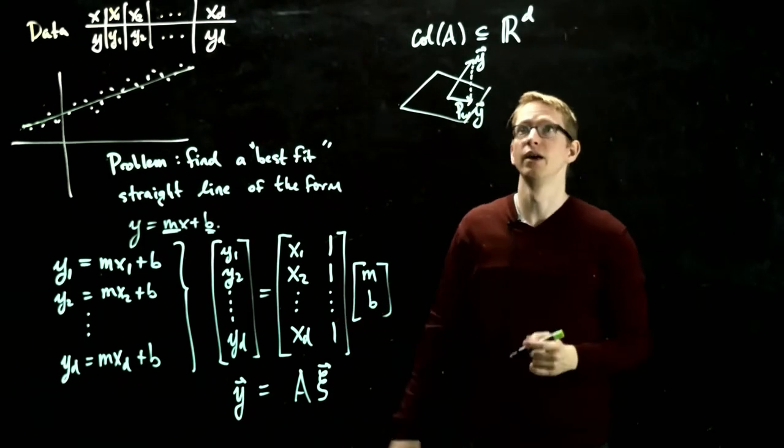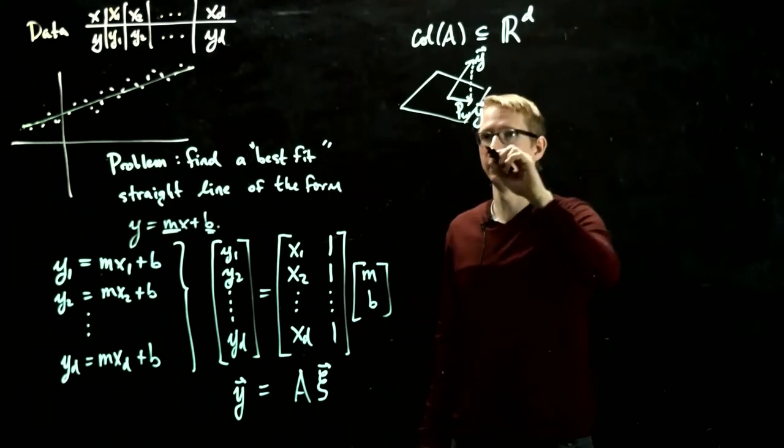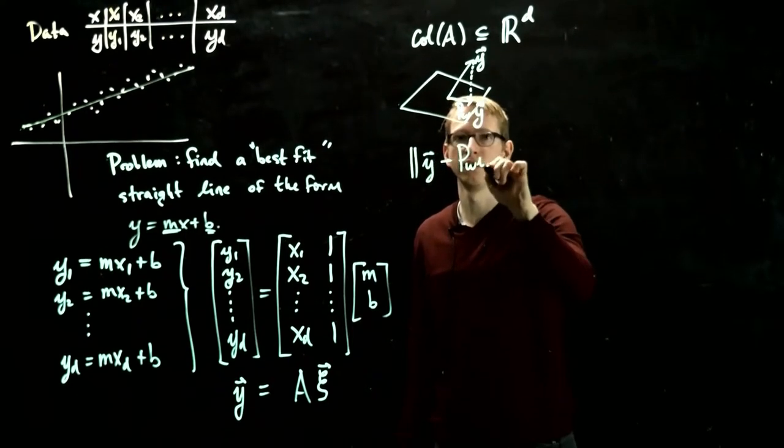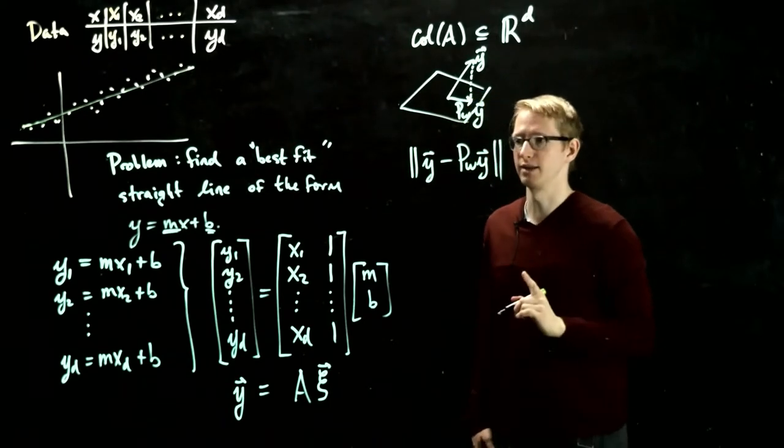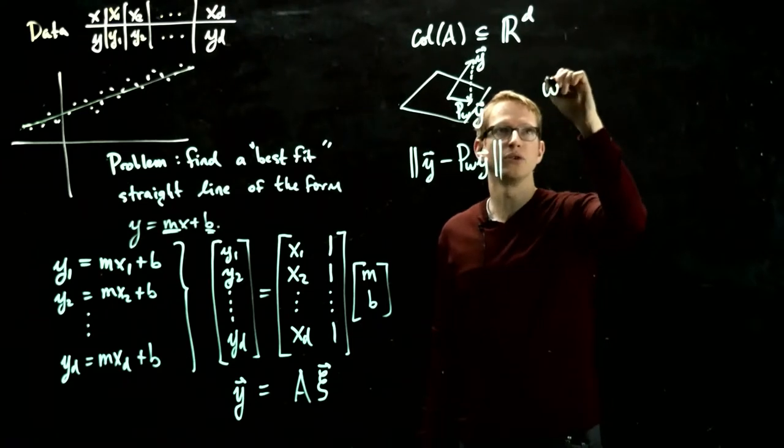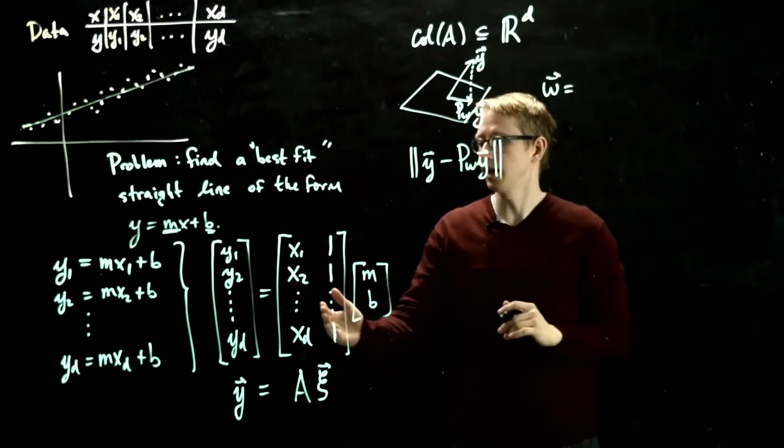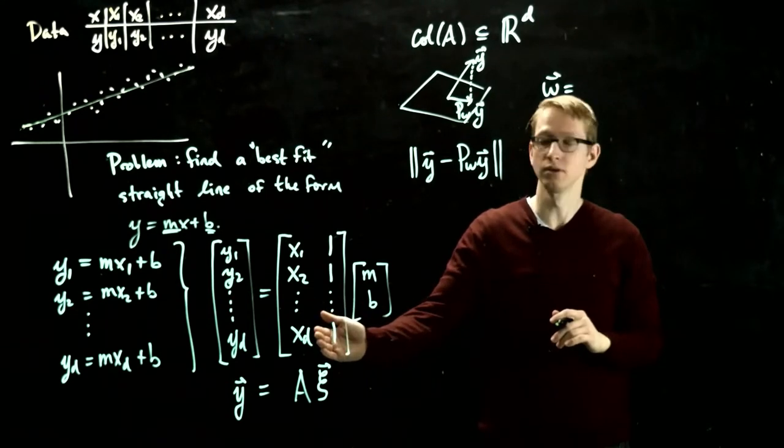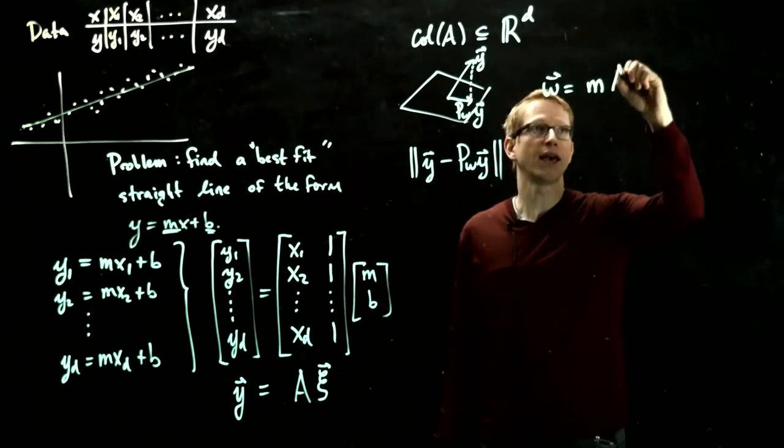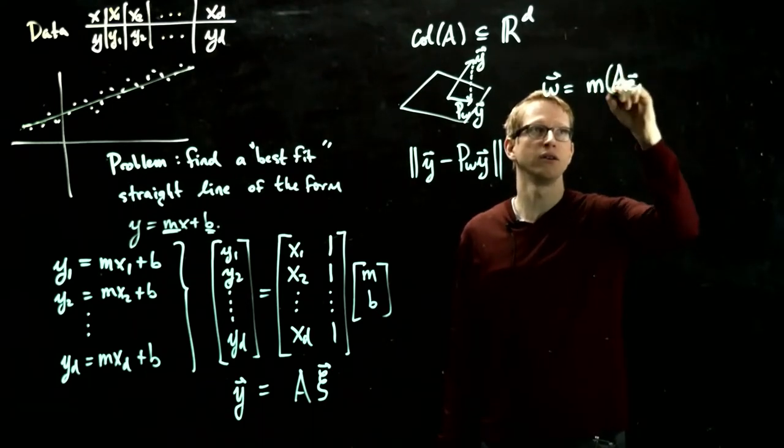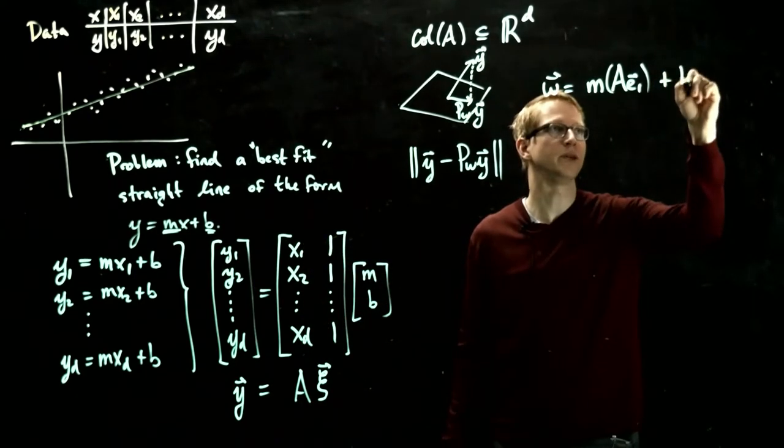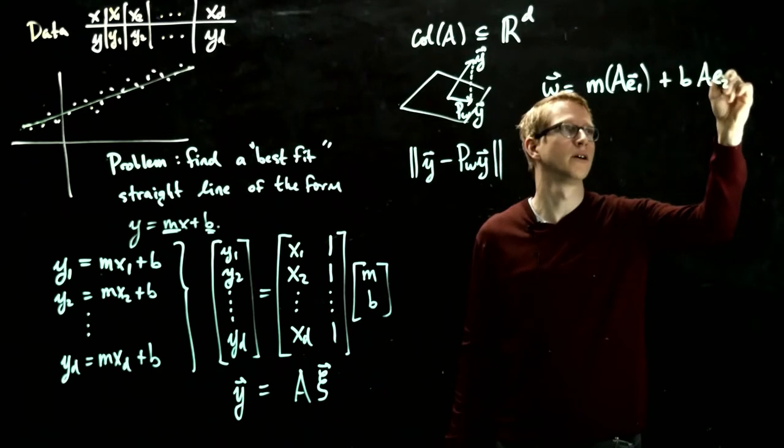In fact, actually we can say what it means right now. If we take the difference of these two vectors, y minus this projection, what are we minimizing? So an arbitrary vector in this subspace, let's write w as an arbitrary vector in this subspace, is a linear combination of these columns. So let's write that linear combination as m suggestively, Ae1, which is the first column of A, which is just all of these x data points, plus b times the second column of A.